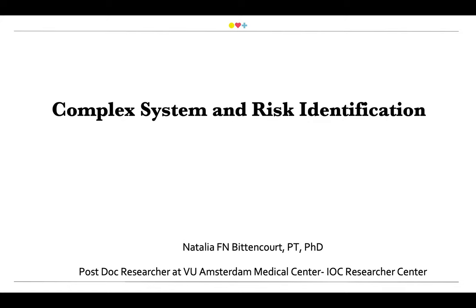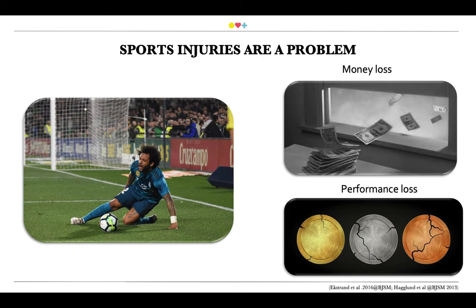As we all know, sports injuries are a big problem because they are related to money loss and performance loss. For example, if a team has fewer injuries their chance to succeed will be greater. The average cost of a first team player in a professional team being injured for one month is calculated to be around 500,000 euros.